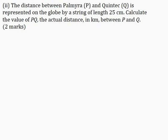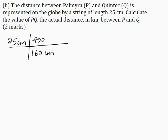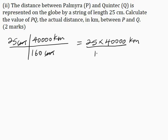Part 2: The distance between Palmyra and Kintec is represented on the globe by a string of length 25 cm. Calculate the actual distance PQ in km between P and Q, for 2 marks. Using the ratio: 160 cm equals 40,000 km, so PQ equals 25 multiplied by 40,000 km divided by 160. Therefore, PQ equals 6,250 km.